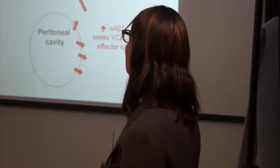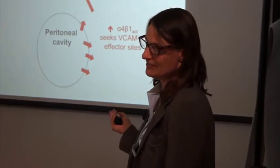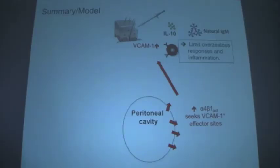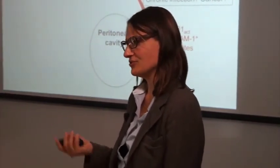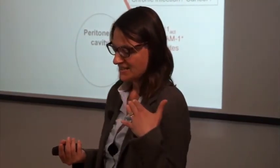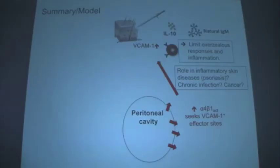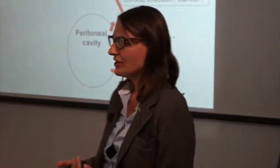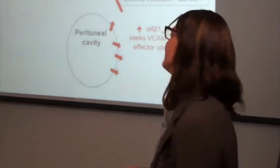We then asked: does alpha-4-beta-1 mediate migration into skin? Blocking alpha-4 integrin with an antibody completely abrogated migration of B1 cells into the peritoneal cavity and inflamed skin, but did not influence migration of B2 cells into skin. So alpha-4-beta-1 does mediate this migration. To put this together: we have steady-state recirculation of B1 cells between the peritoneum and tissues including uninflamed skin. When there's an insult to the skin — like a wound — LPS entering the system or endogenous TLR-4 ligands like hyaluronic acid isoforms formed in inflammation could signal to the peritoneum. B1 cells are released, express activated alpha-4-beta-1, and find VCAM-1-expressing effector sites, entering the skin where they produce IL-10 and IgM to limit overt inflammation.